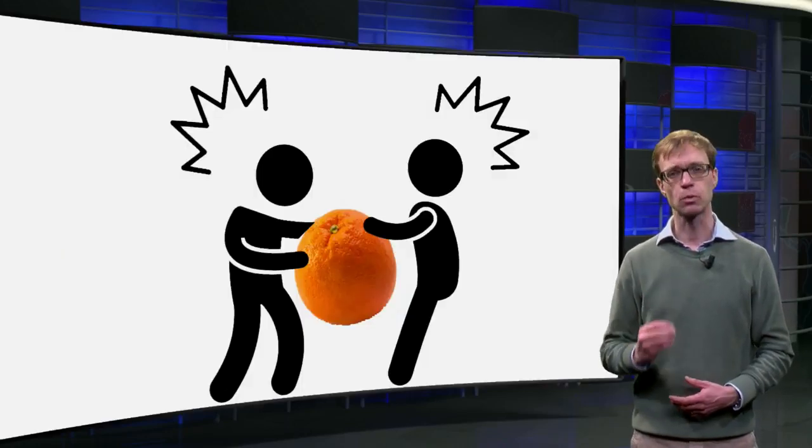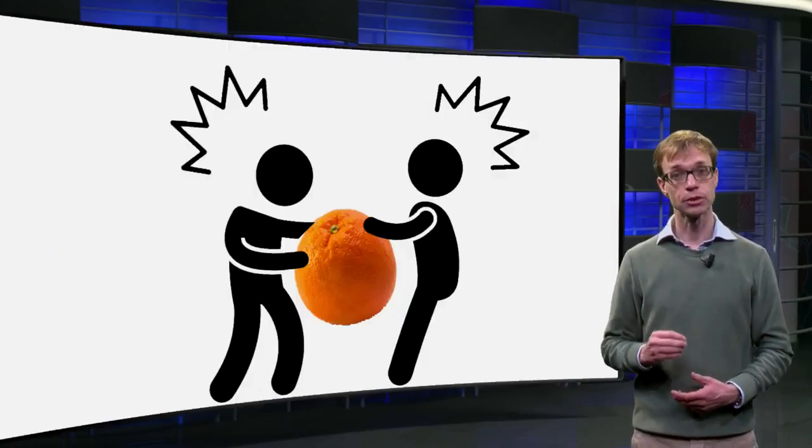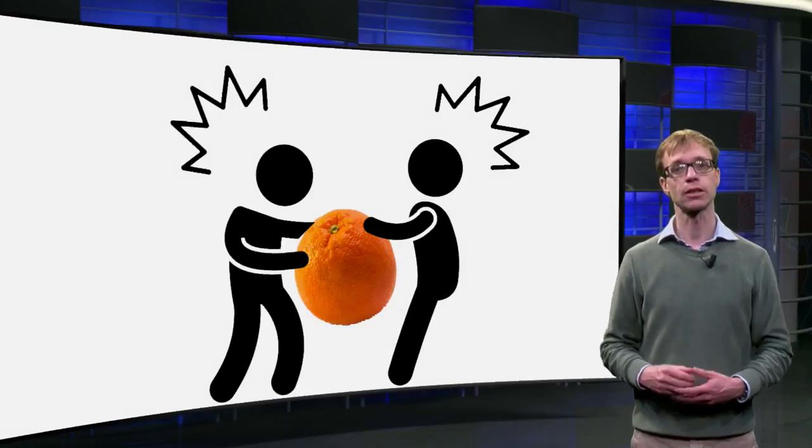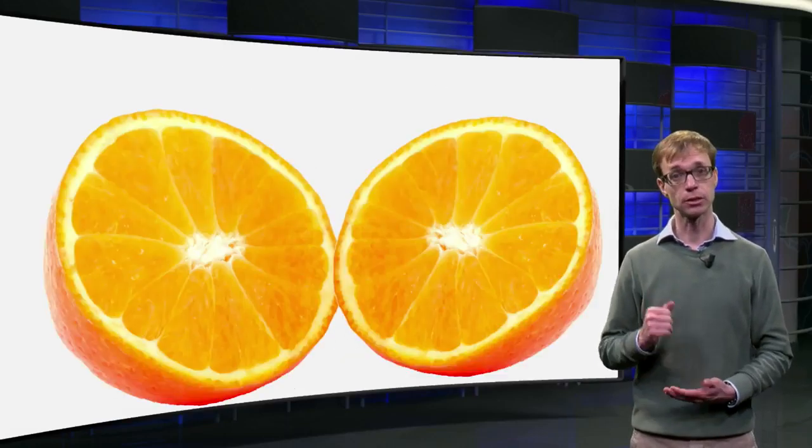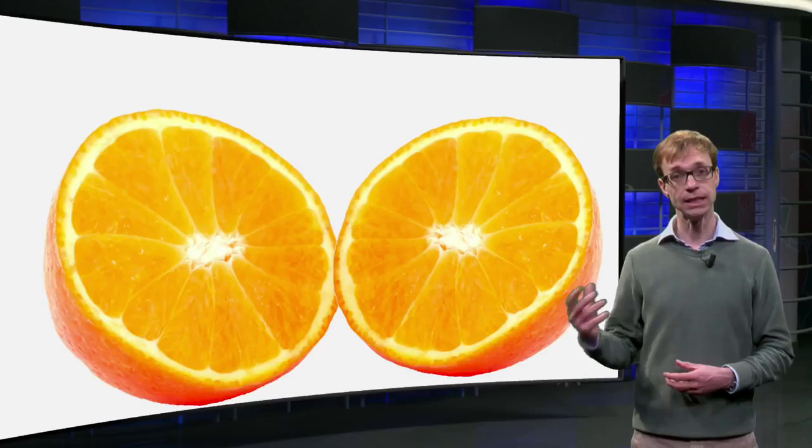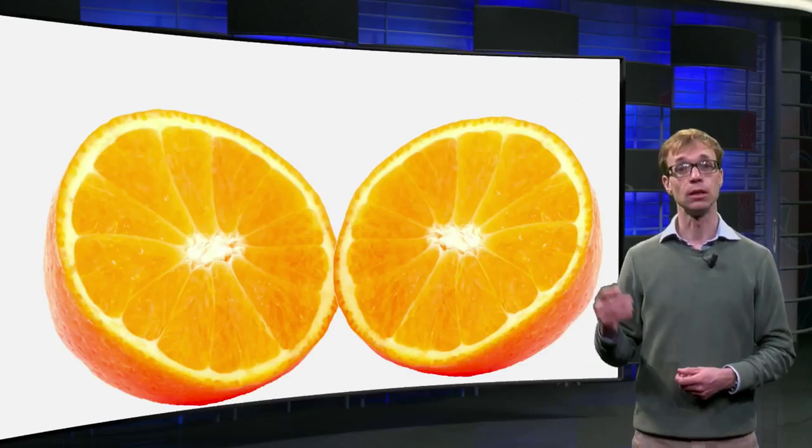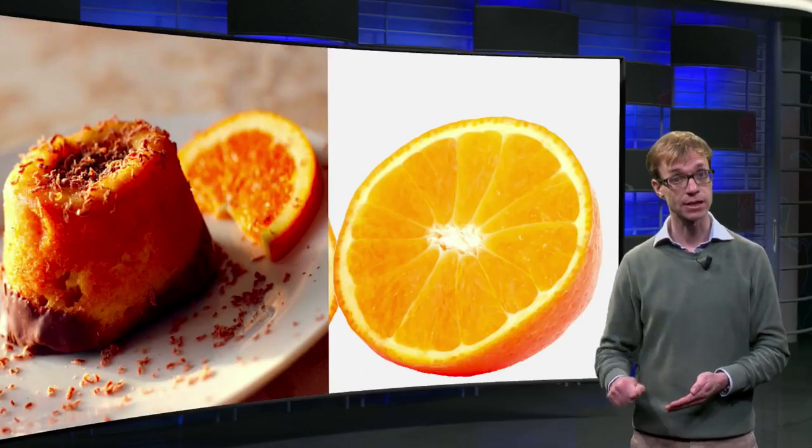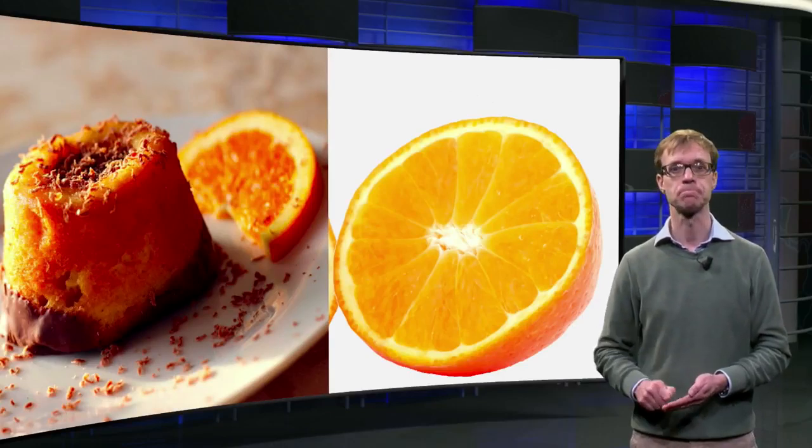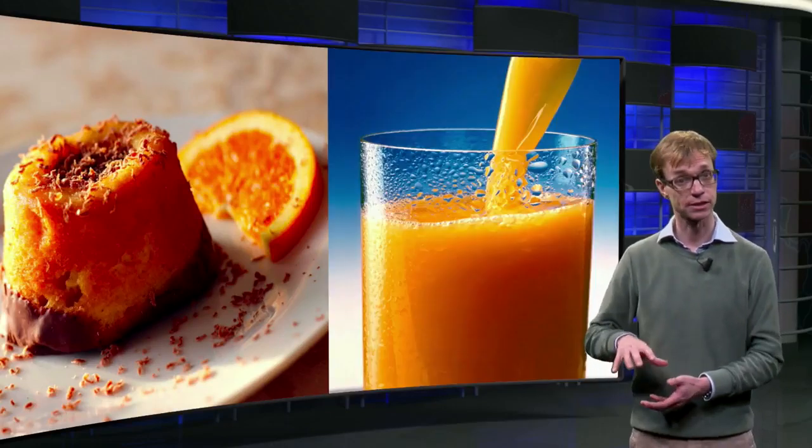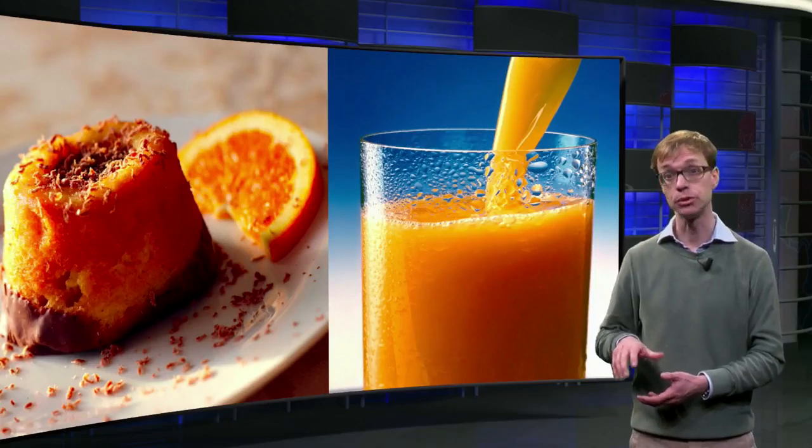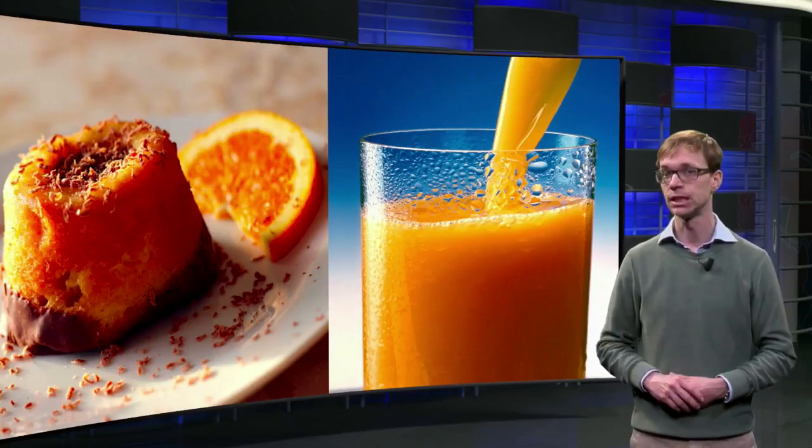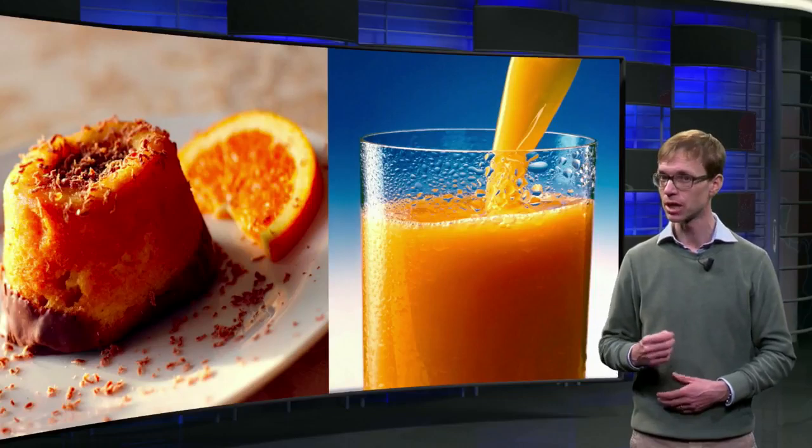Two brothers are fighting over one orange. Eventually their father offers a fair solution. He cuts the orange in half and the boys each get one half. The older brother only uses the zest of his half to garnish a cake. The younger brother squeezes his half of the orange for the juice. Surely a better deal would have been possible.